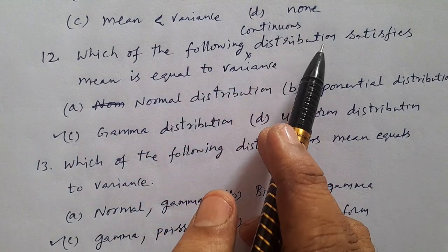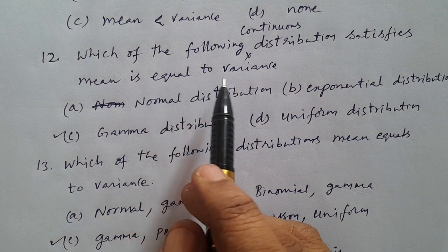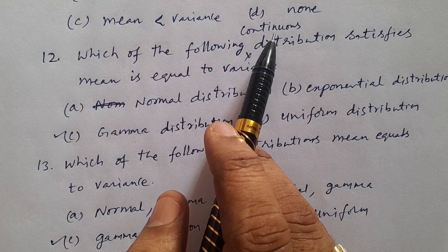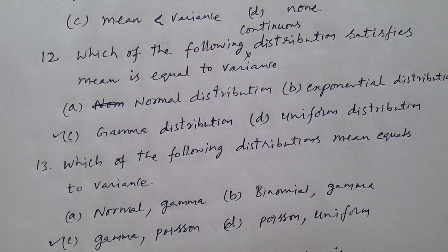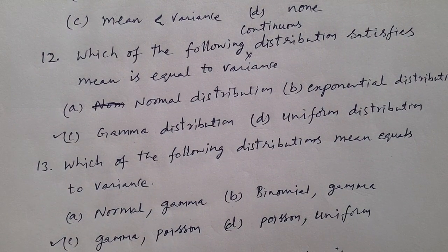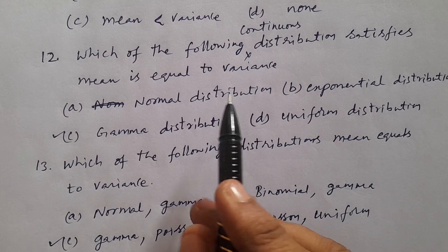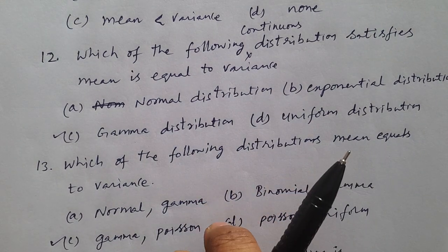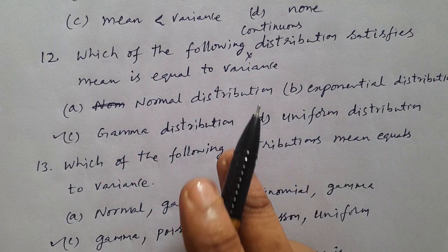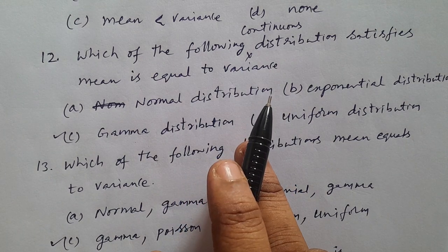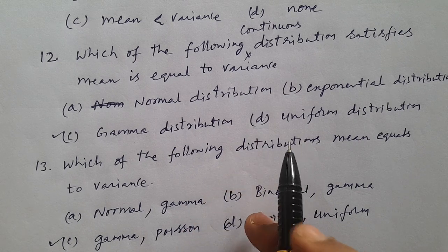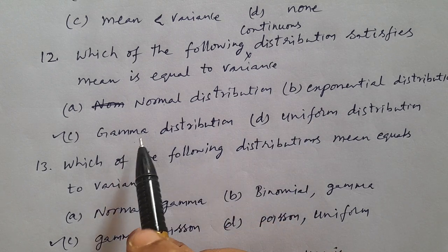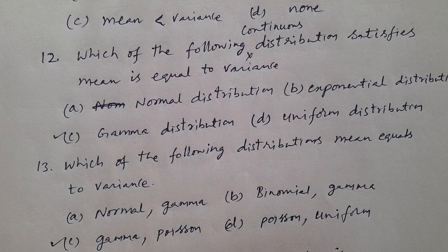In Telugu: Which of the following continuous distributions satisfies mean equal to variance? Options: Normal, Exponential, Gamma, Uniform. The answer is Gamma distribution — for gamma distribution, mean is equal to variance.